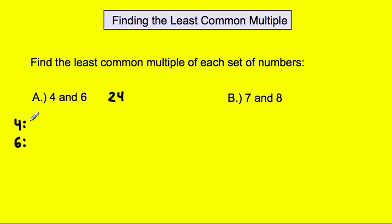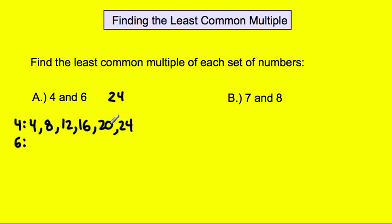Multiples of 4 start with 4 — that's 4 times 1. Then 4 times 2, then 4 times 3 is 12, and so on, all the way up to 24. Multiples of 6 start with 6 times 1, then 6 times 2, 6 times 3, and then 6 times 4.